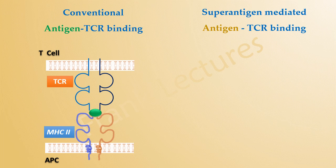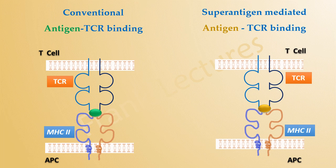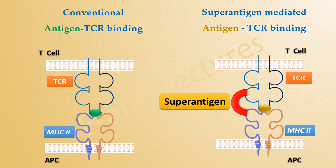Here the antigen is not specific to the T-cell receptor. So how does this binding occur? The superantigen binds simultaneously to the T-cell receptor and the MHC molecule. It has been found that superantigens bind to the variable domain of the beta chain of the T-cell receptor. This binding mimics conventional antigen T-cell receptor binding.